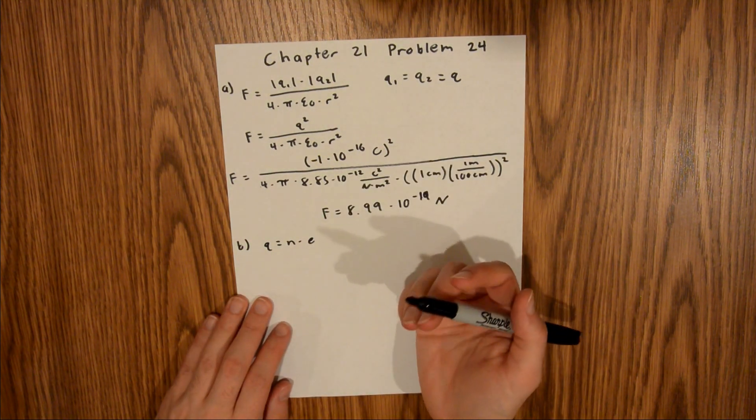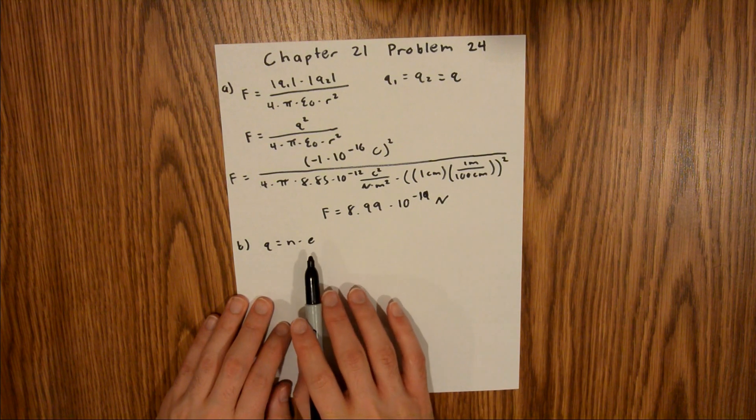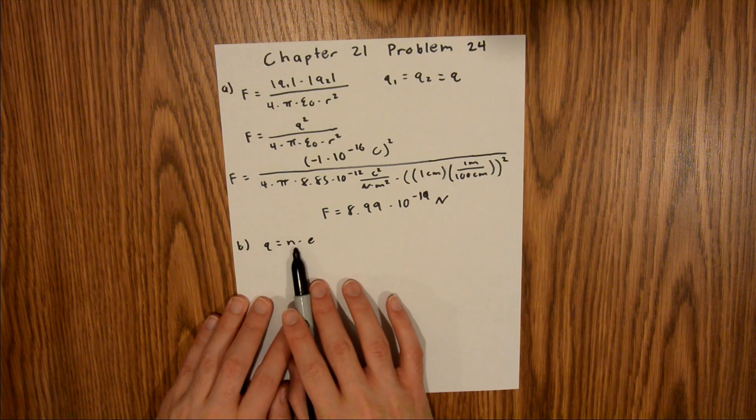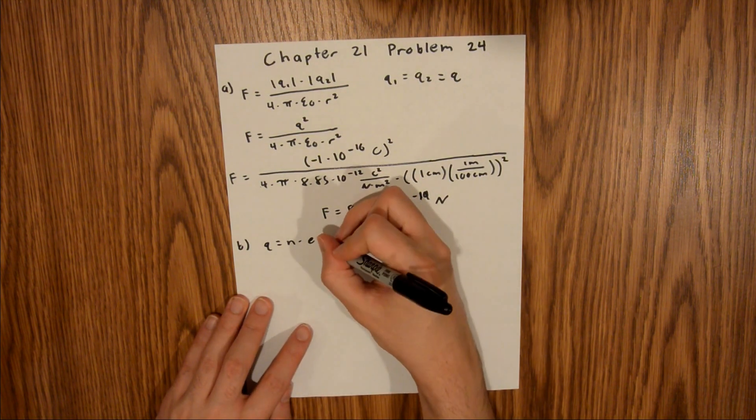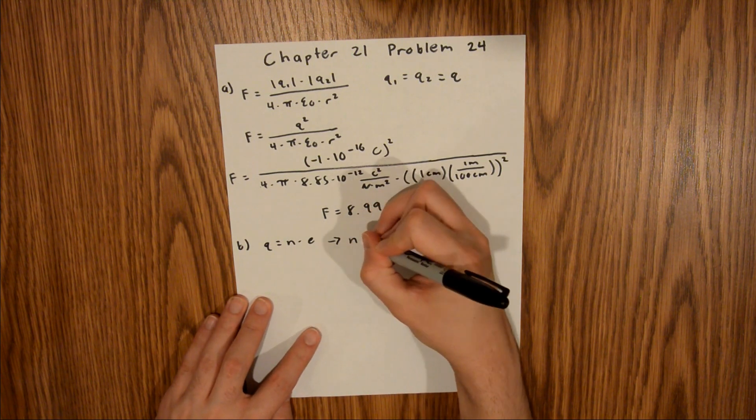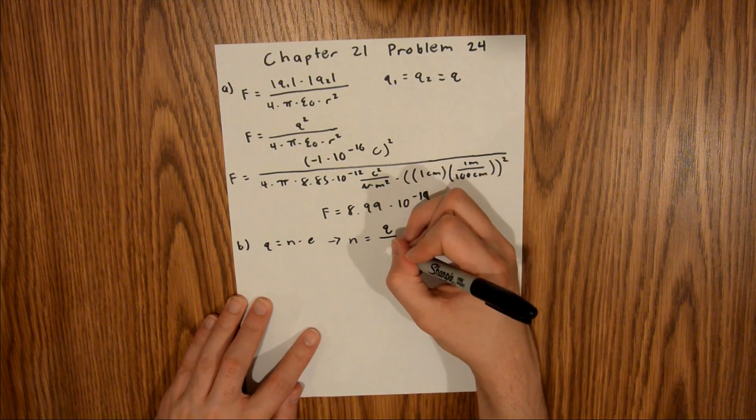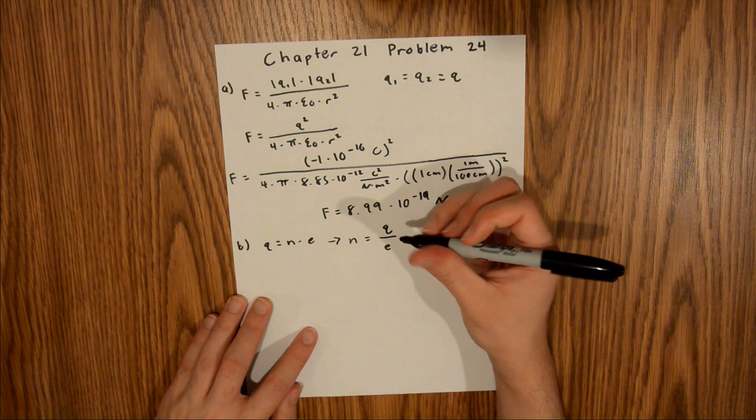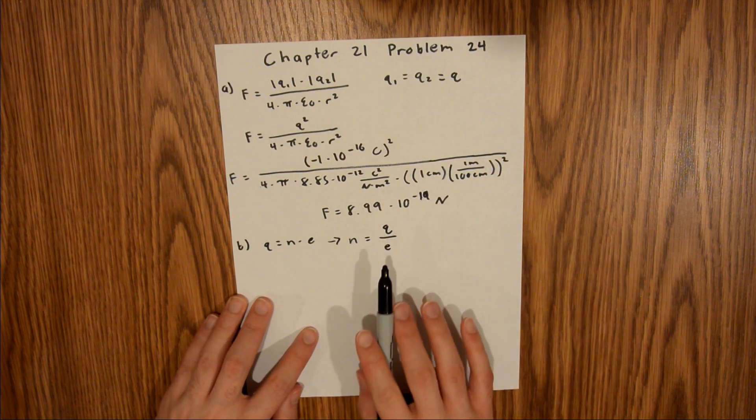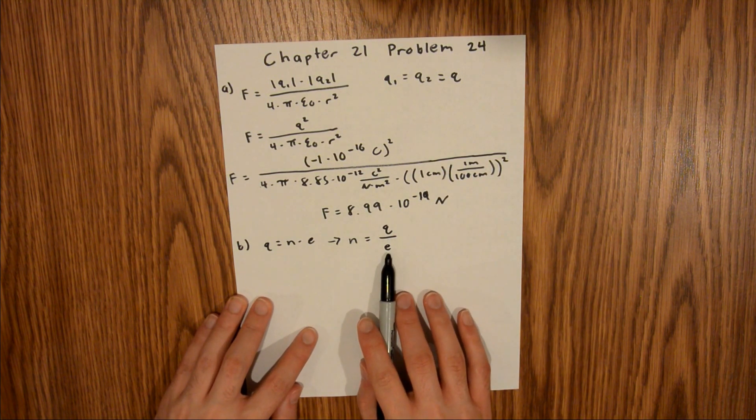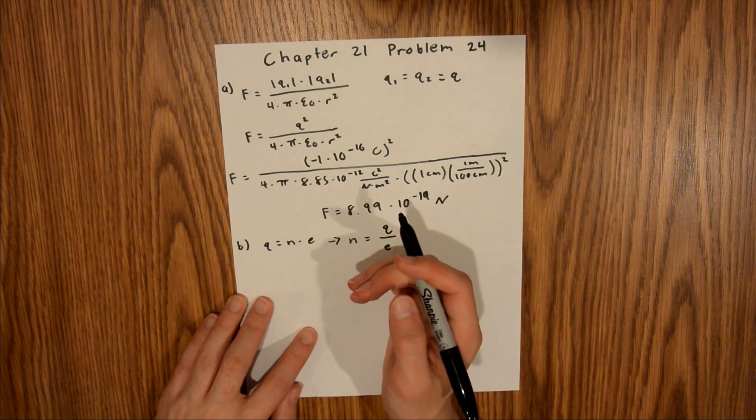Since we're trying to find the number of electrons, we can divide both sides by the charge of an electron to isolate n. The number of electrons would be equal to the total charge divided by the charge of an electron. We're given the charge in the problem, and the charge of an electron is a universal constant, so we have everything we need to solve for n.